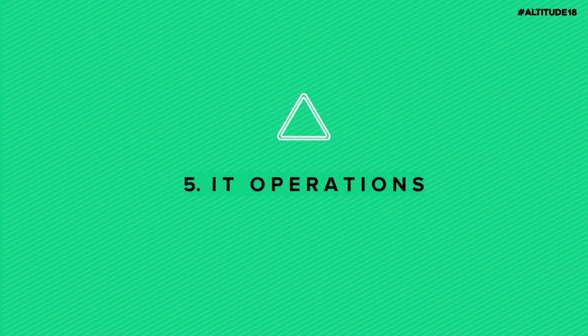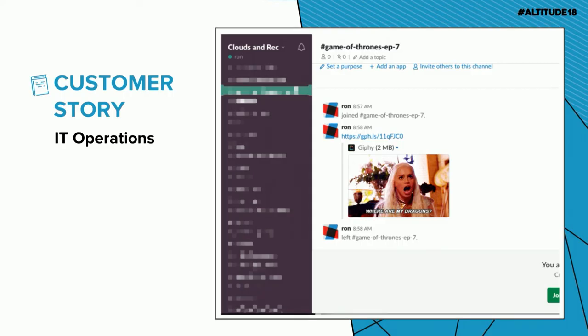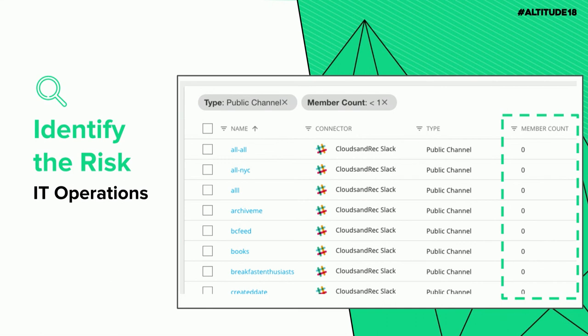The last area is IT operations — these may not be security risks per se, but they're day-to-day tasks where BetterCloud can save you time and maintenance steps. First: how many of you allow end users to create public Slack channels? And how many have a 'Game of Thrones season 5 episode 3' channel with no members in it? We see hundreds, maybe thousands, of empty channels. To identify this, go into BetterCloud, go to the groups grid, filter the connector to Slack, and filter for channels with less than one member — it gives you that list pretty quickly.